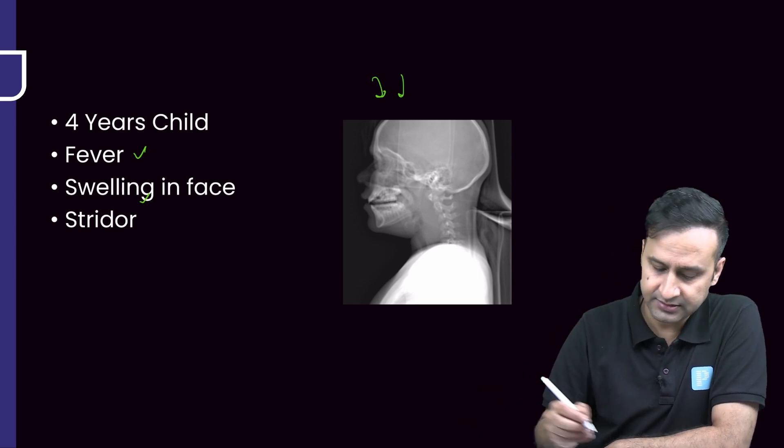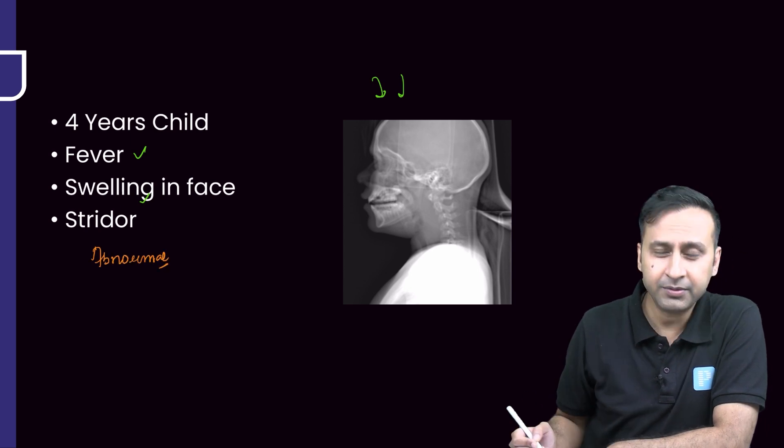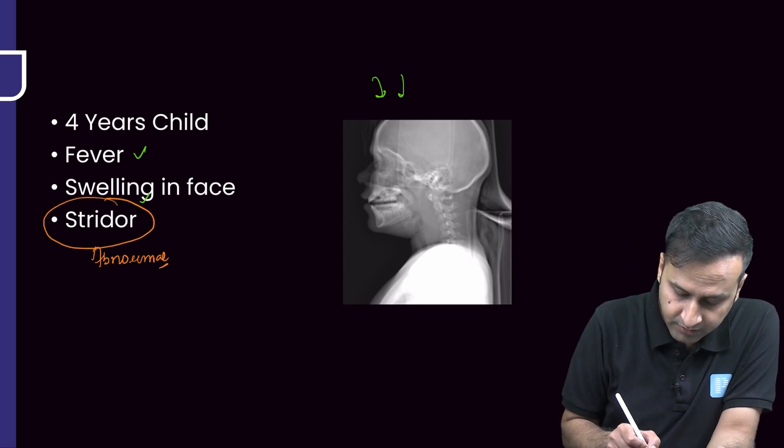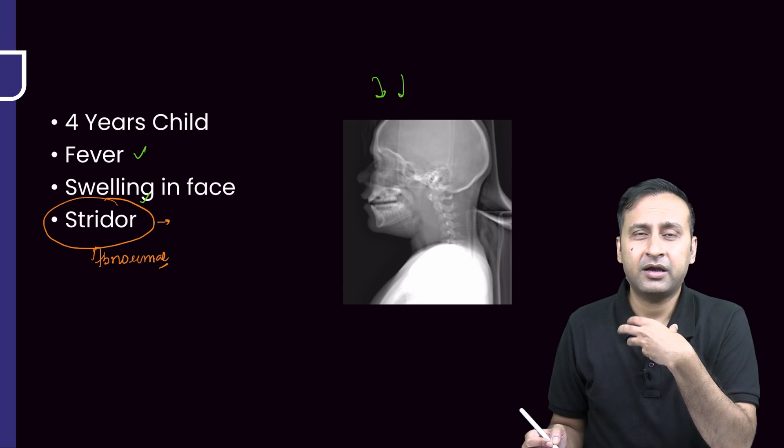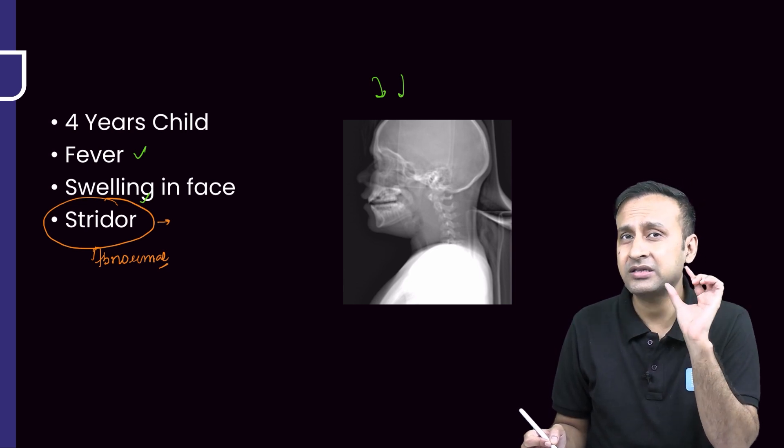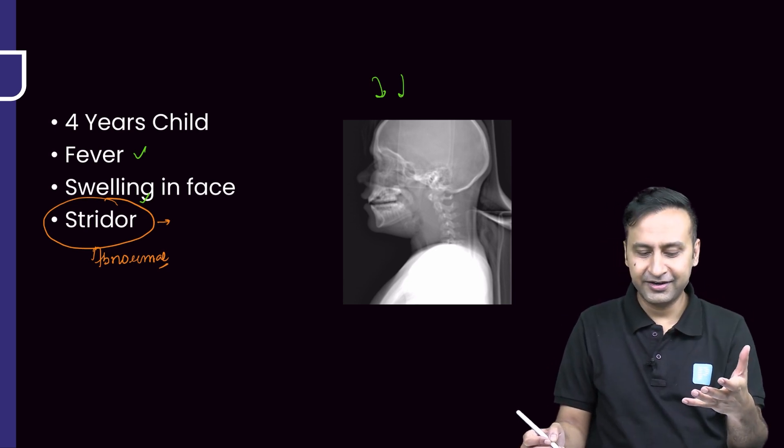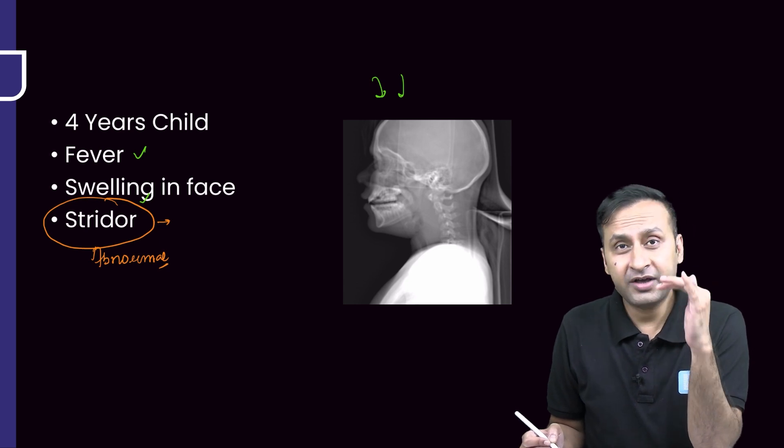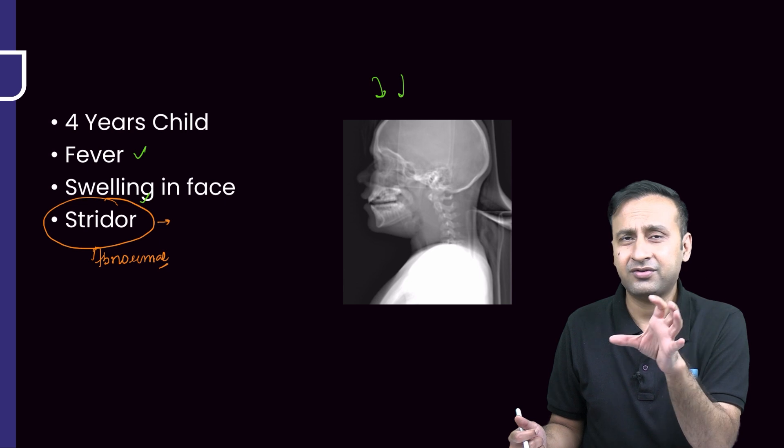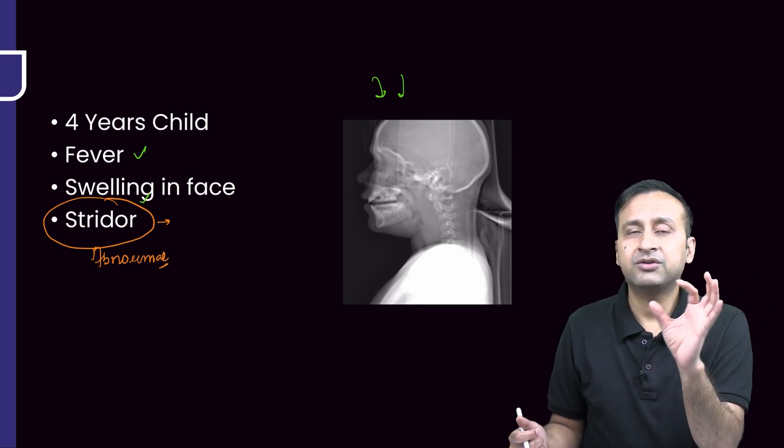What makes it even more severe is stridor. This is something you hear when the patient is taking a deep inspiration or expiration - you can hear the sound of breathing. The patient having stridor means there must be some form of compression of the upper digestive tract.